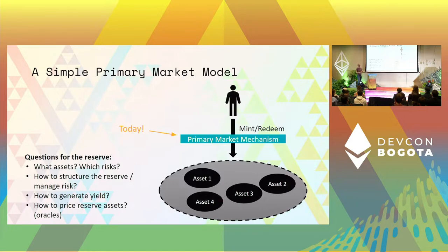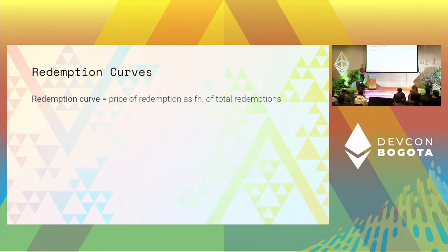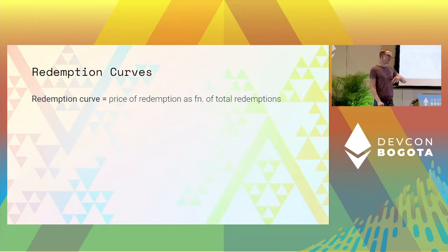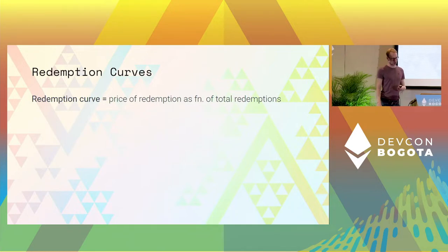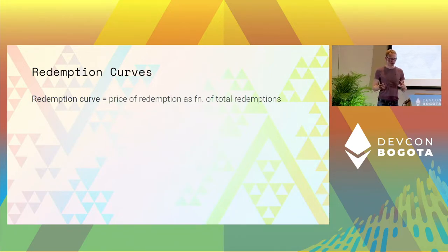Basically the question is: someone comes to your system. The system may be under-reserved or illiquid to some degree. They want to redeem a stablecoin. What is the amount of assets you offer them? To answer that, we introduce a more general tool which we call the redemption curve. This is a general tool to analyze any stablecoin design.